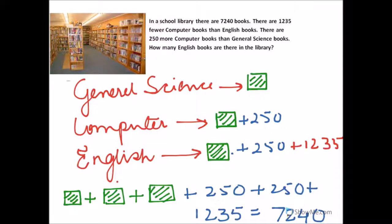If you go through the question properly, you have to understand which subject has the least number of books. There are 1,235 more English books than computer books, so English books are more than computer books. There are 250 more computer books than general science books, so general science has the least number of books.